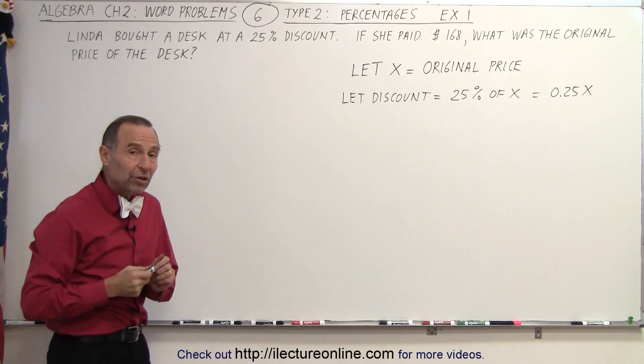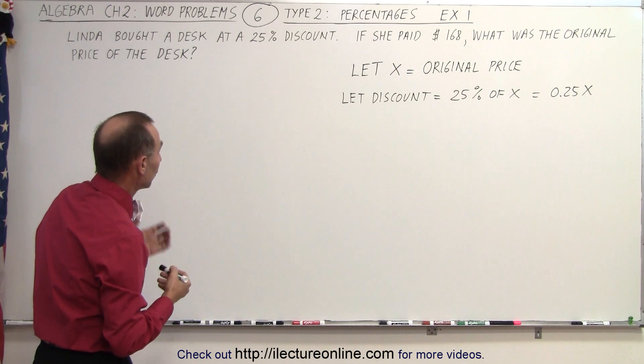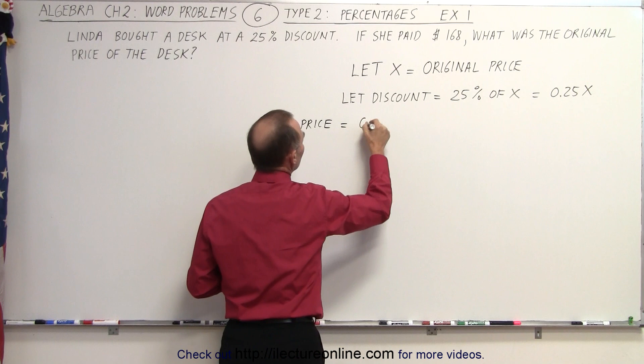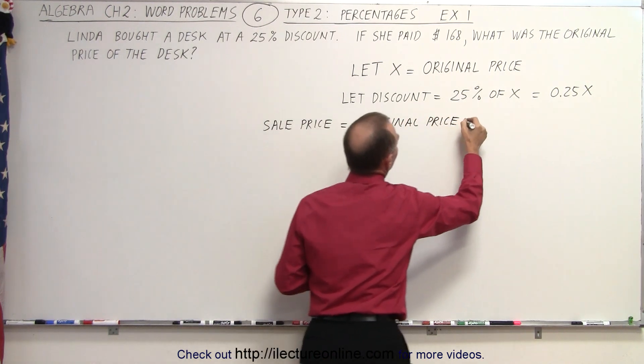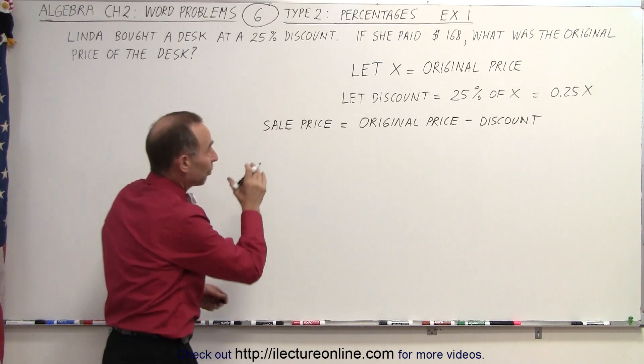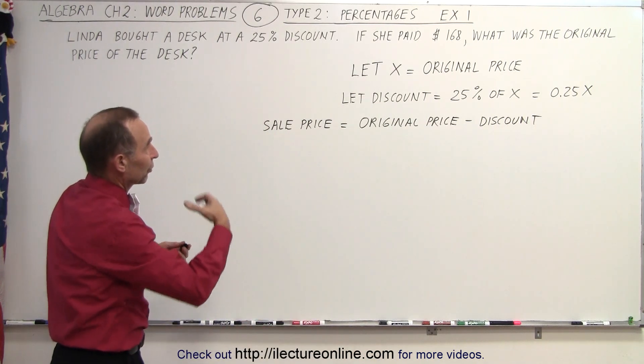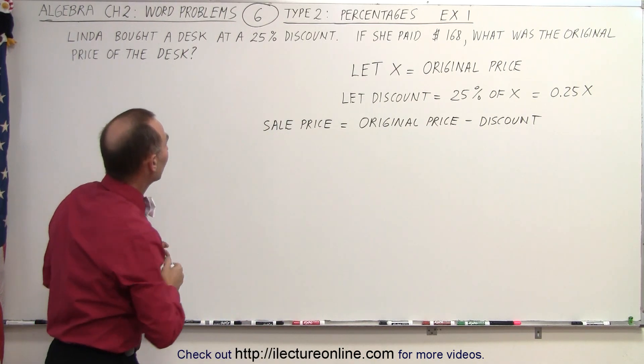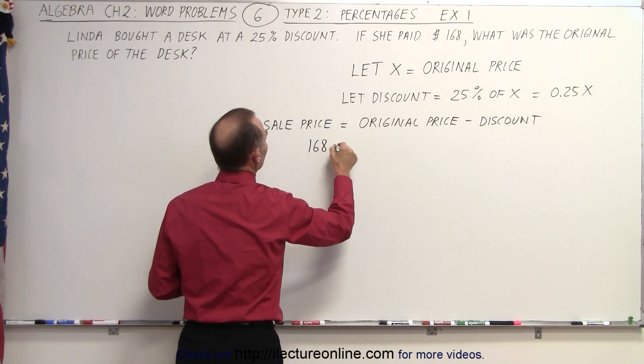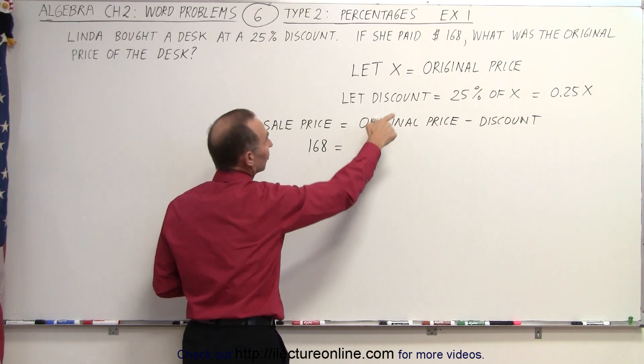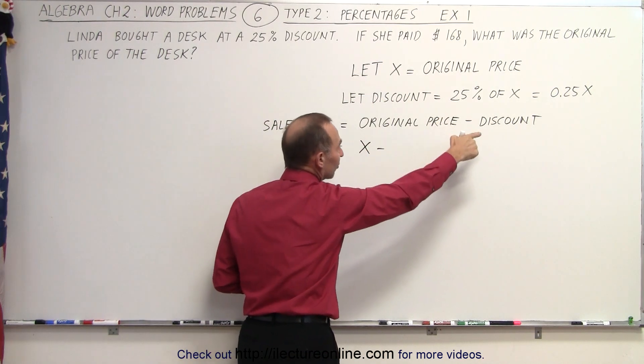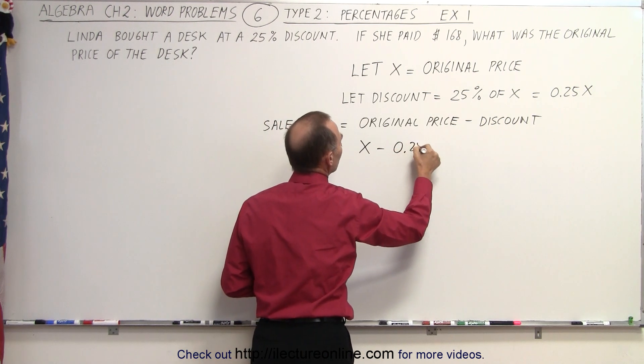Now we can set up an equation to help us solve the problem. We can say that the sale price is equal to the original price minus the discount. So now we have to express each portion of that equation in terms of x or in terms of what's given. The sale price is what she paid for it. So we can say 168 is the sale price. The original price, that's defined as x. And from that we subtract the discount, which is 0.25x.